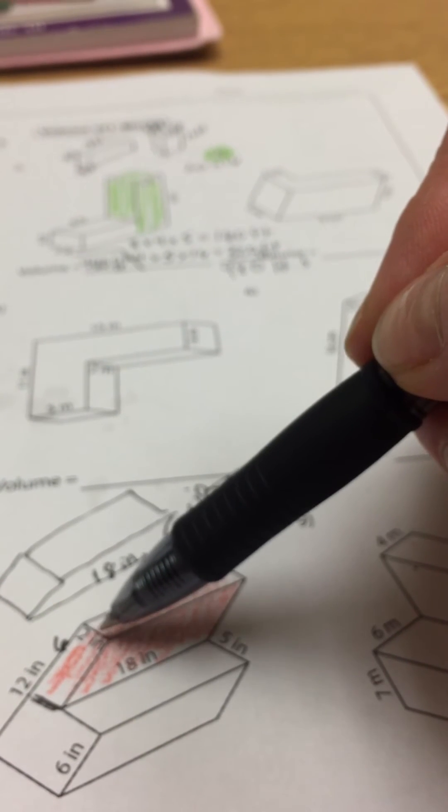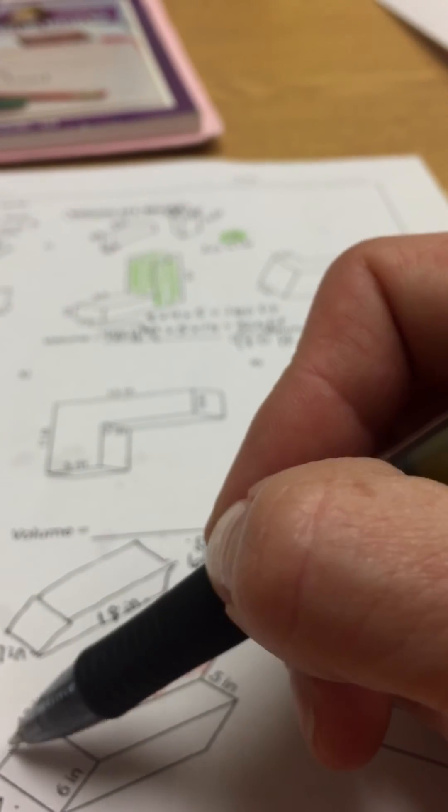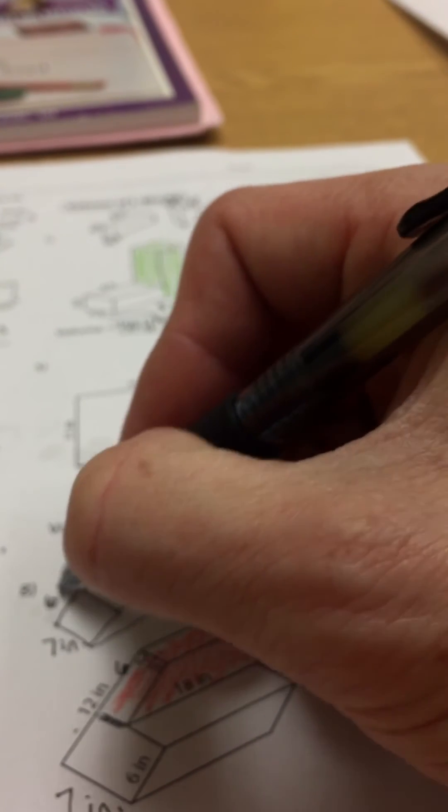All right. If this is 2, and this piece down here is 5, if I put the 5 together with the 2, I am going to get 7. So this is 7 inches right here. 7 by 18. And I have to figure out how high it is. Well, if this piece was 6, this piece has to be 6. So I know that that's 6 inches.